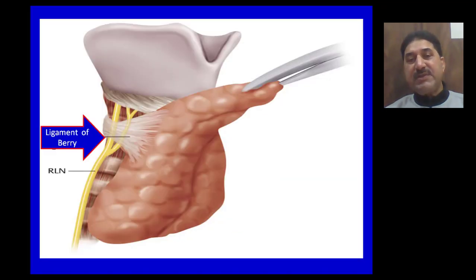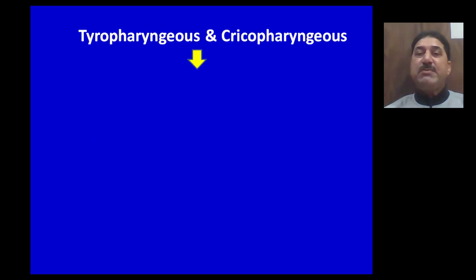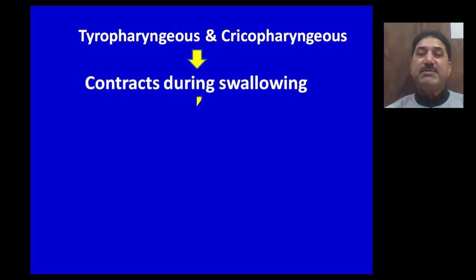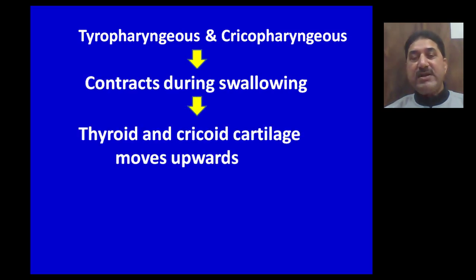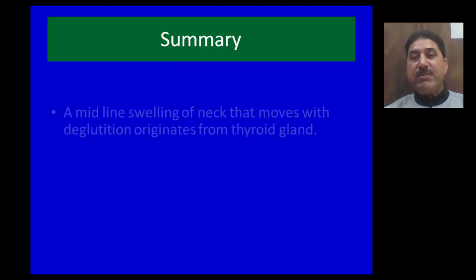It is the attachment of the thyroid gland to the tracheal rings that causes the thyroid gland to move during deglutition, on contraction of the inferior constrictor muscle of the pharynx. Thyropharyngeus and cricopharyngeus, which are parts of the inferior constrictor muscle, on contraction during swallowing cause movement of the thyroid and cricoid cartilages and also of the trachea. The thyroid gland moves upwards during deglutition because it is attached to the tracheal rings by the ligament of Berry.